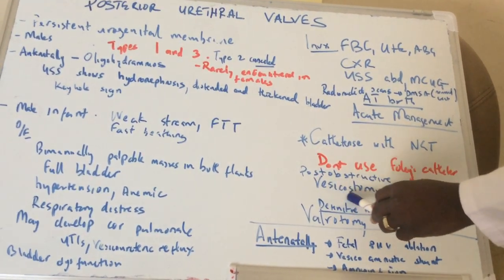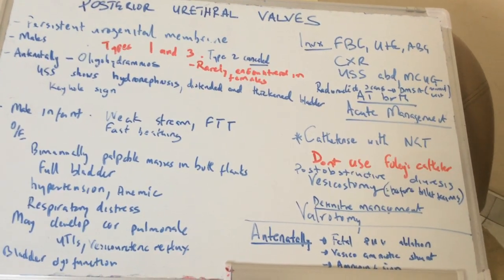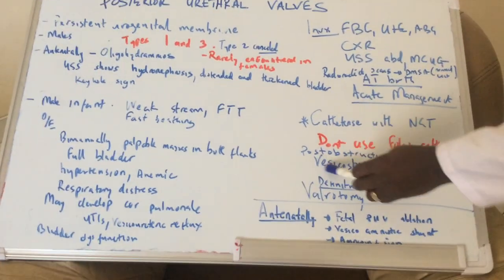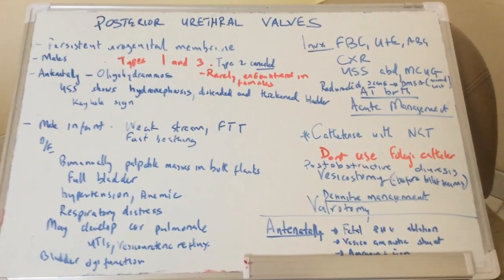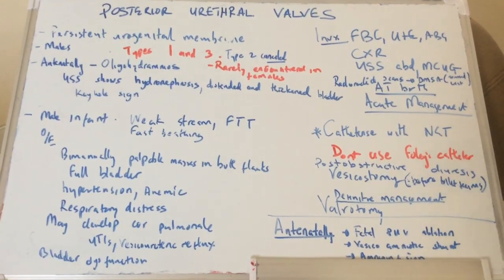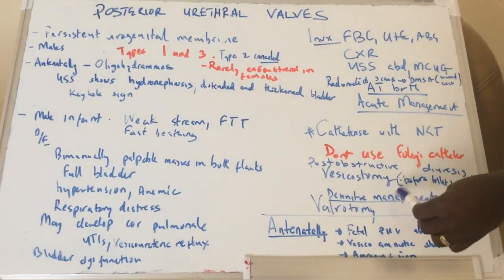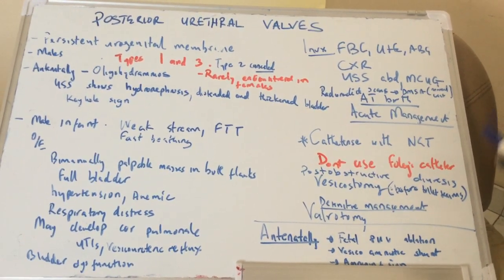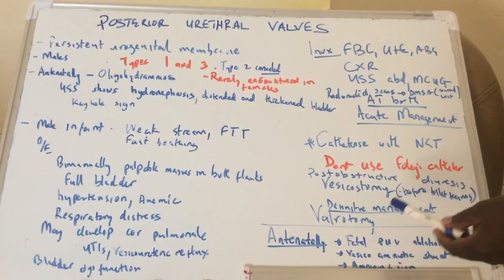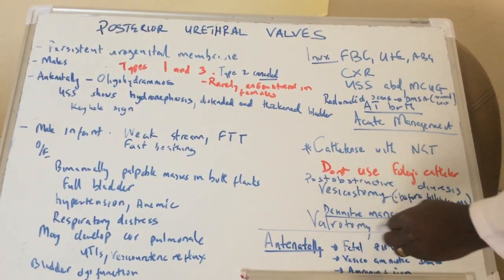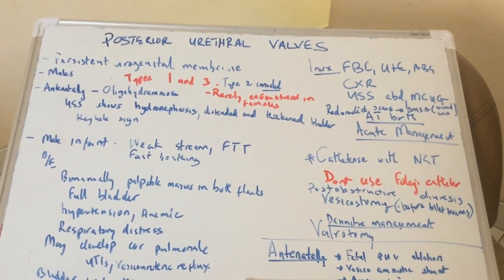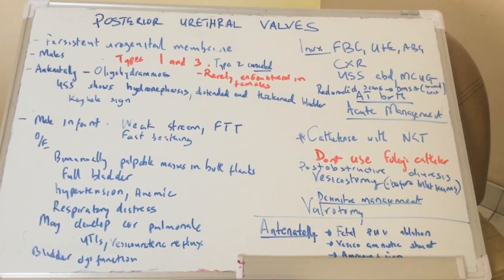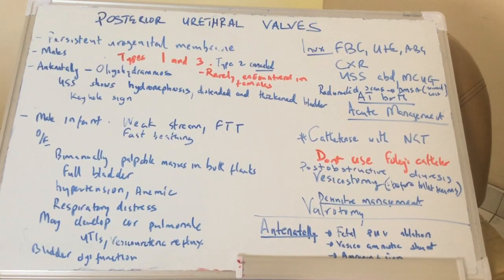In centers where valve ablation cannot be done in the acute period, a vesicostomy can be done. A vesicostomy is an opening from the bladder to the external world, allowing urine to drain directly from the bladder to the surface. Definitive treatment can then be done when the patient is older and stable, depending on the center's approach and presence of experts — anesthetists and surgeons. Valve ablation can be done endoscopically depending on the patient's age and the center.